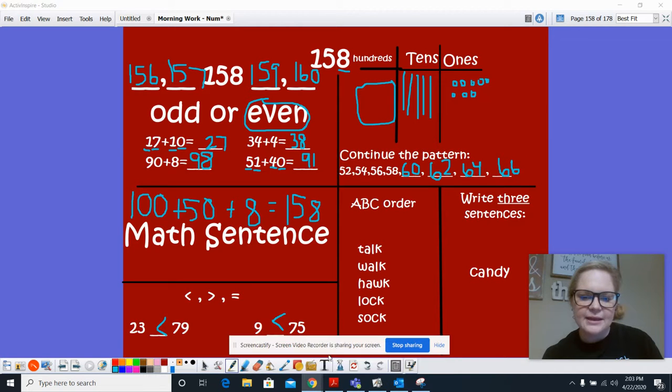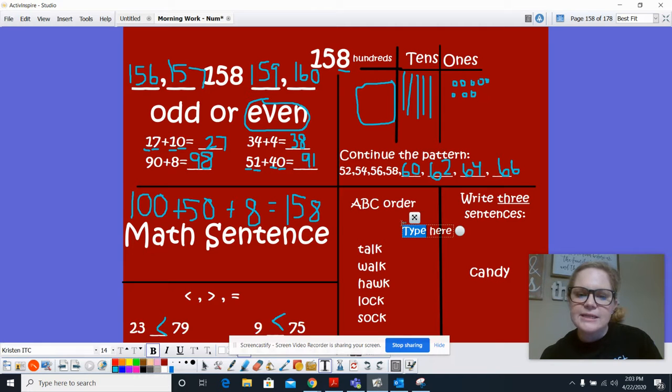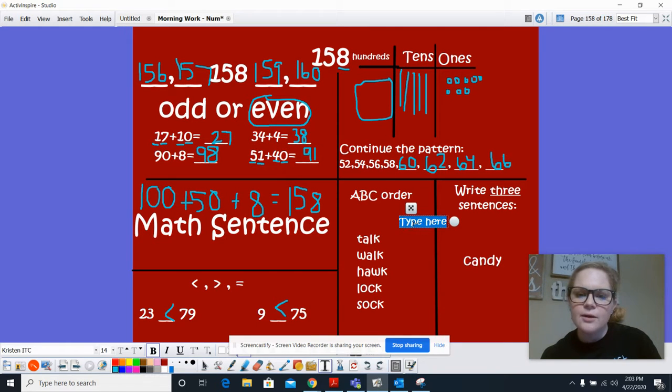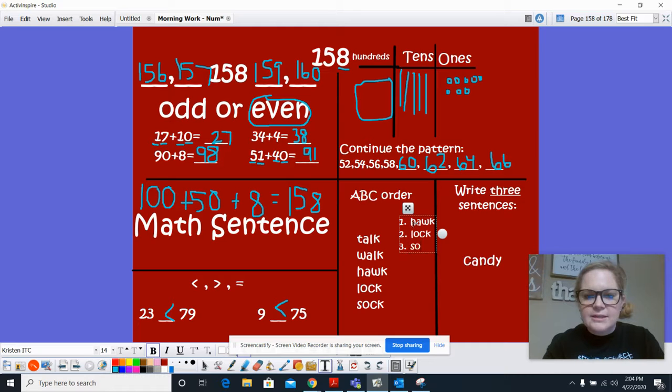Okay. Let's take a look at our ABC order. For our ABC order today, we have the words talk, walk, hawk, lock, sock. So first we would have the word hawk. Then we would have lock. Then we would have sock. Then we would have talk. And last we would have walk.